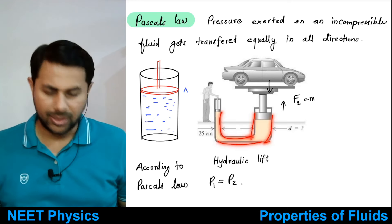A2 is very large compared to A1. For example if A2 is 100 times A1, the force that gets applied at the second piston would be 100 times the force you are applying on the first piston. So the upthrust on the car is 100 times the force exerted by you on the first piston, and that is why the car is lifted easily. This is just force multiplication.